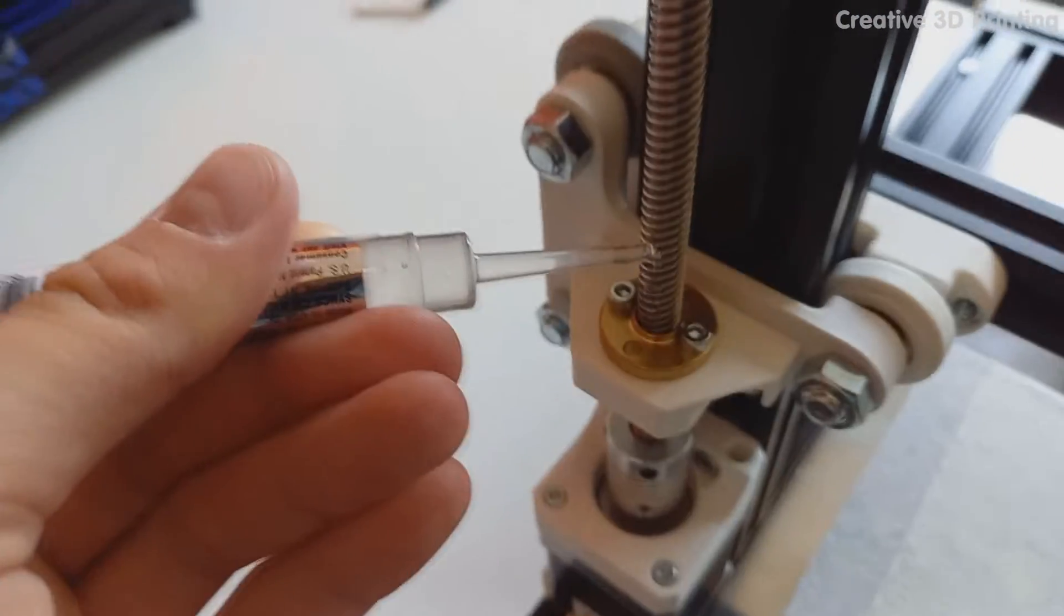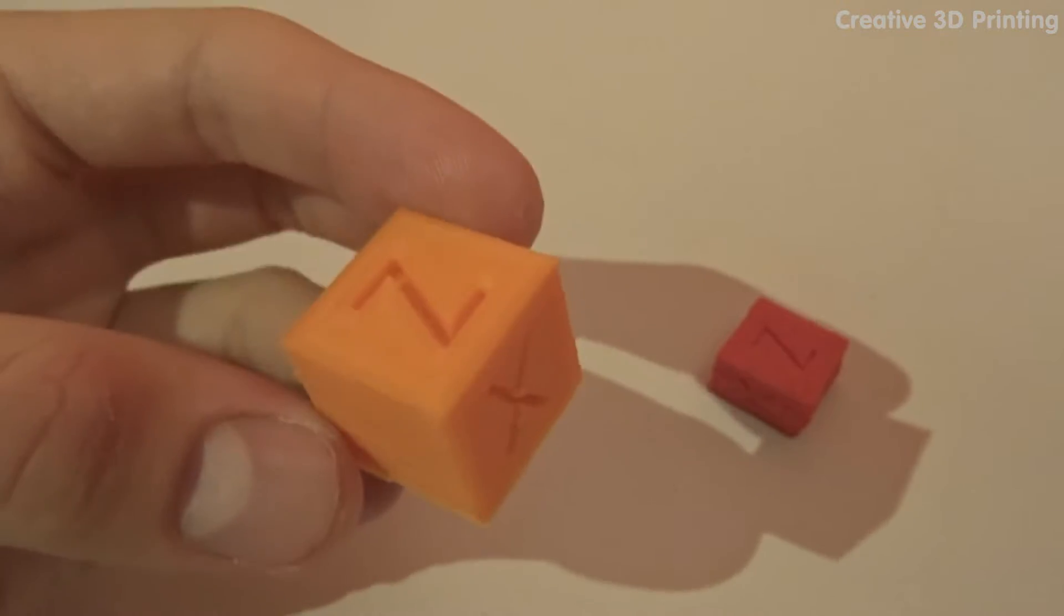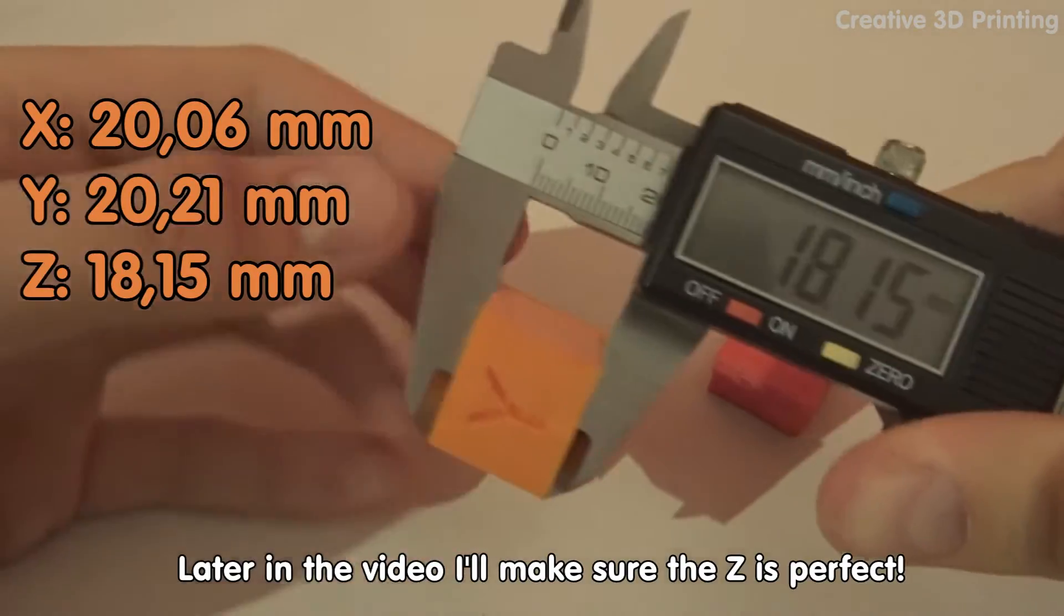I grease the lead screws so that there is not too much friction to allow the X profile to move in height with the extruder. Now I print the XYZ cube again and as you can see, the cube looks much better now.